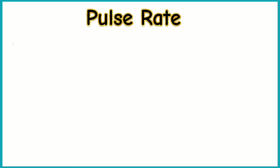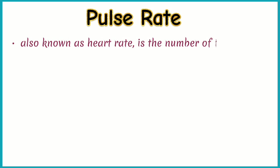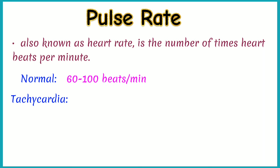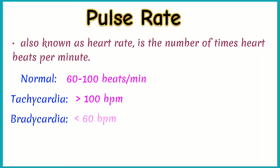Pulse rate, also known as your heart rate, is the number of times your heart beats per minute. A normal resting heart rate should be between 60 to 100 beats per minute. If your heart rate is over 100 beats per minute when you are at rest, this is considered tachycardia. And a heart rate below 60 beats per minute when you are at rest is considered bradycardia.